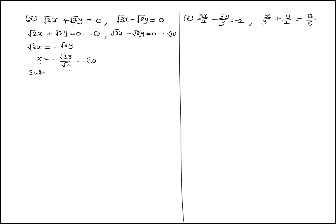Substitute the value of x equal to minus root 3 y upon root 2 in equation number 2. We put the x value into equation 2: root 3 x minus root 8 y equal to 0 becomes root 3 into (minus root 3 y upon root 2) minus root 8 y equal to 0.